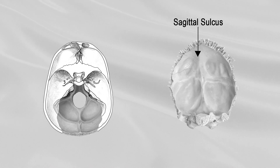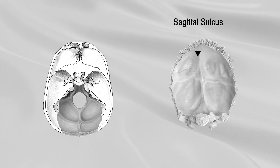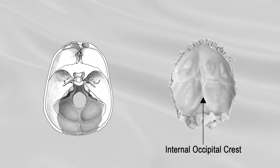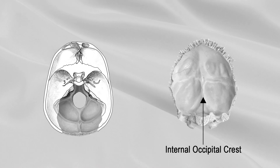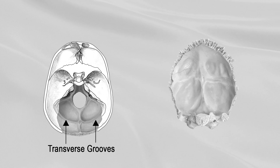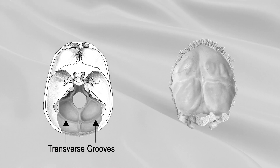The upper division runs to the superior angle of the bone, and on one side of it, generally the right, lies a deep groove, the sagittal sulcus. The lower division of the cruciate eminence is prominent and is named the internal occipital crest. Transverse grooves extend one on either side from the internal occipital protuberance to the lateral angles of the bone.